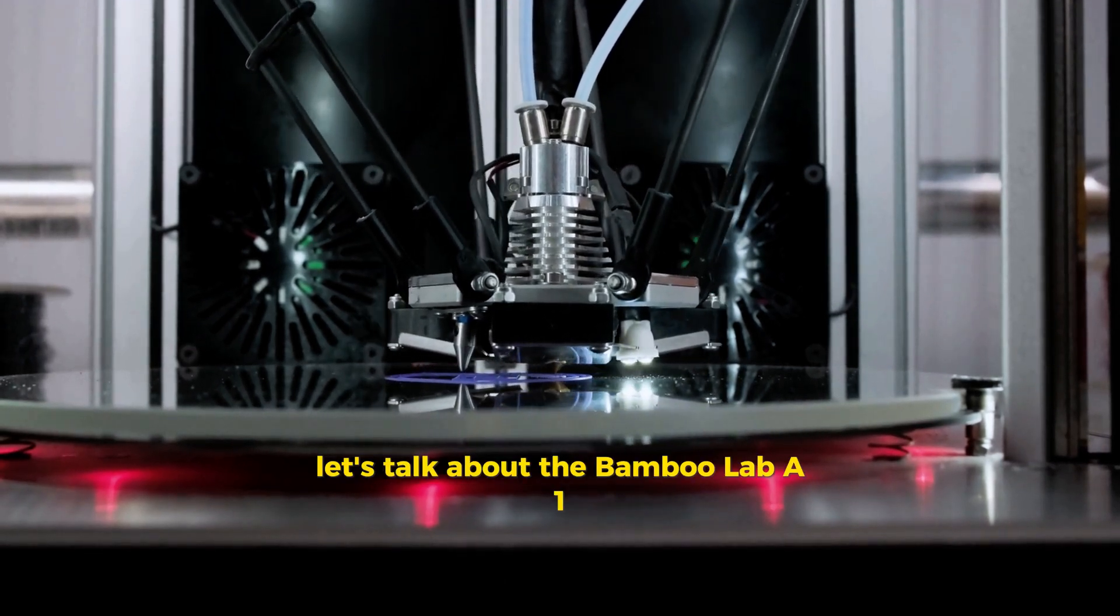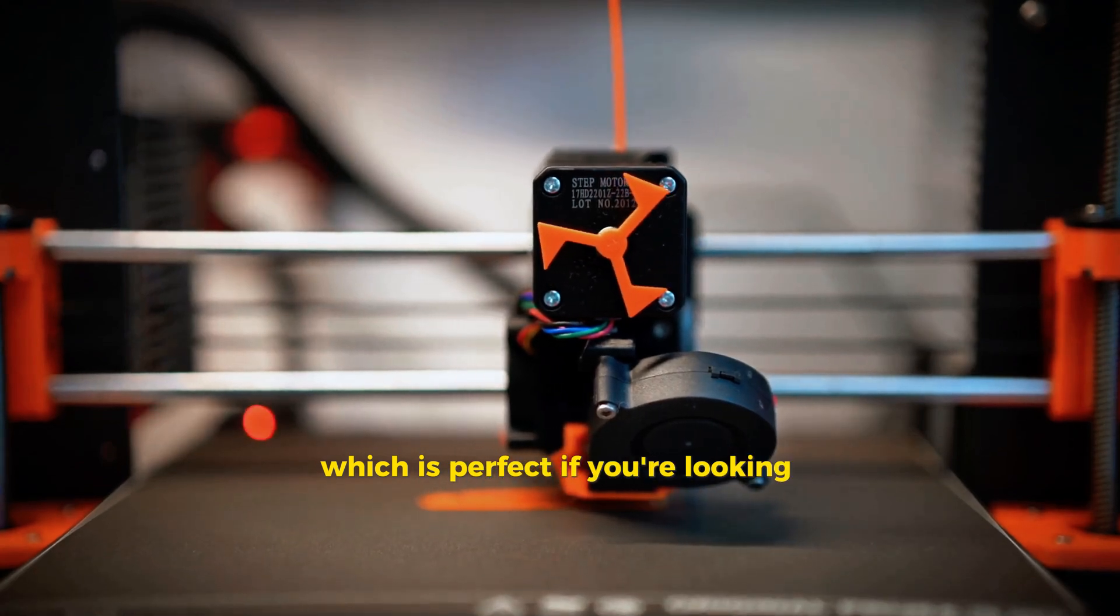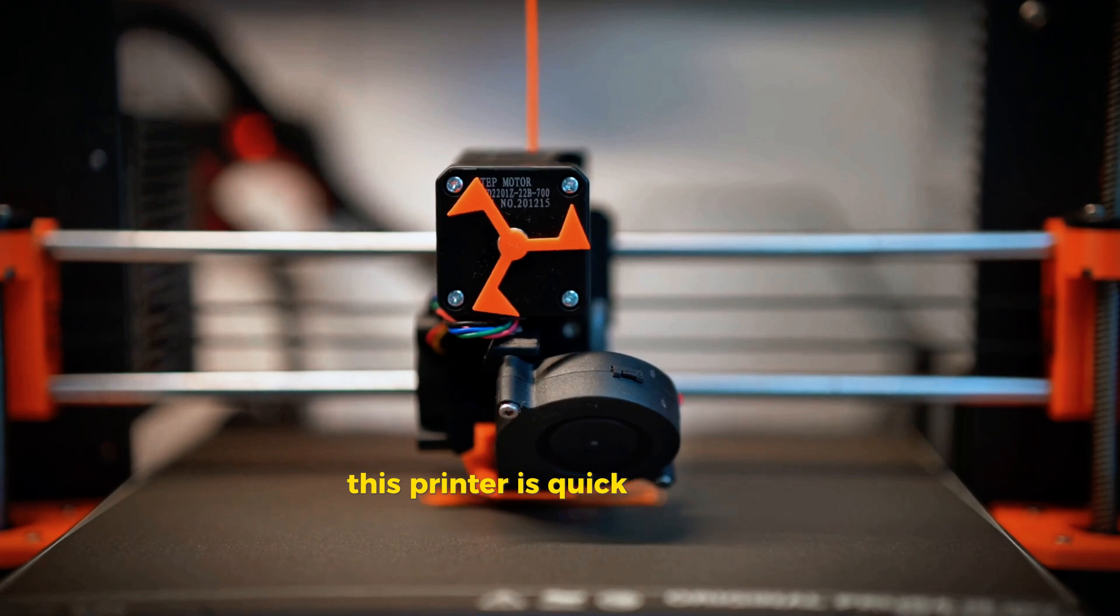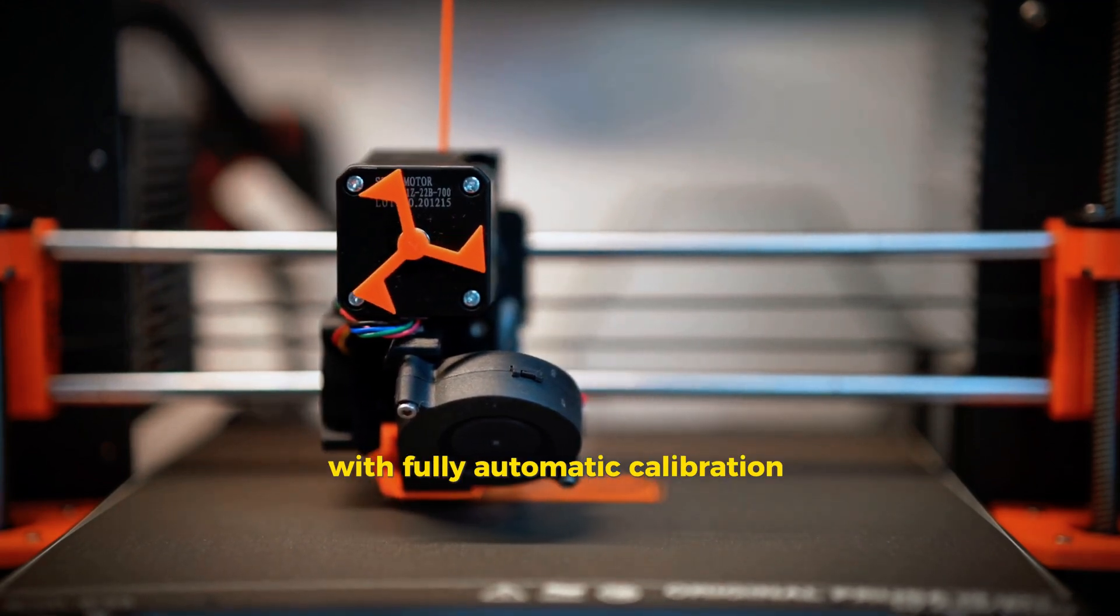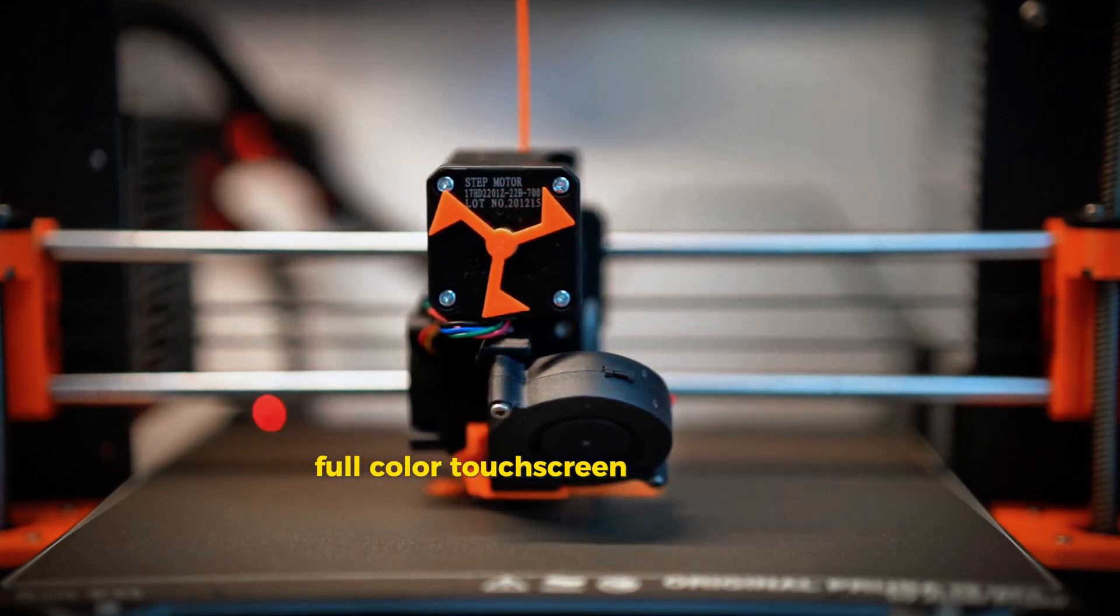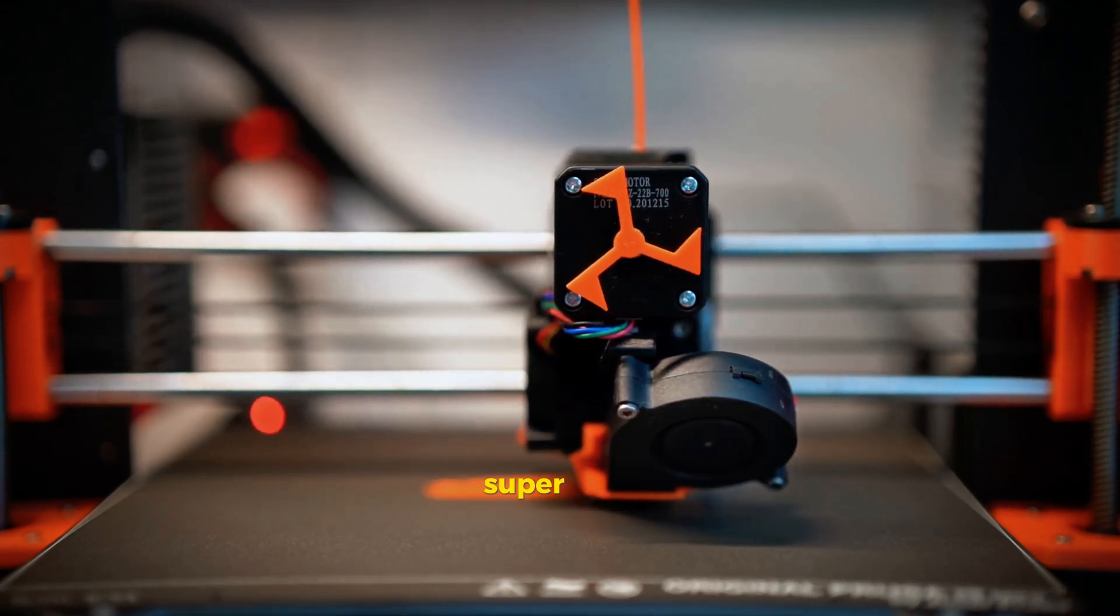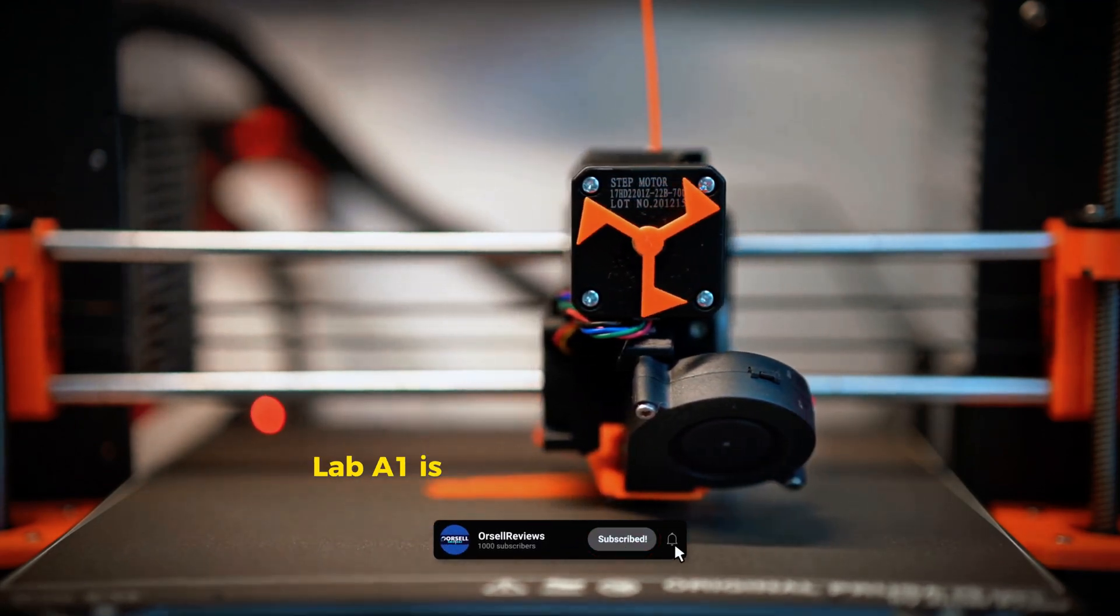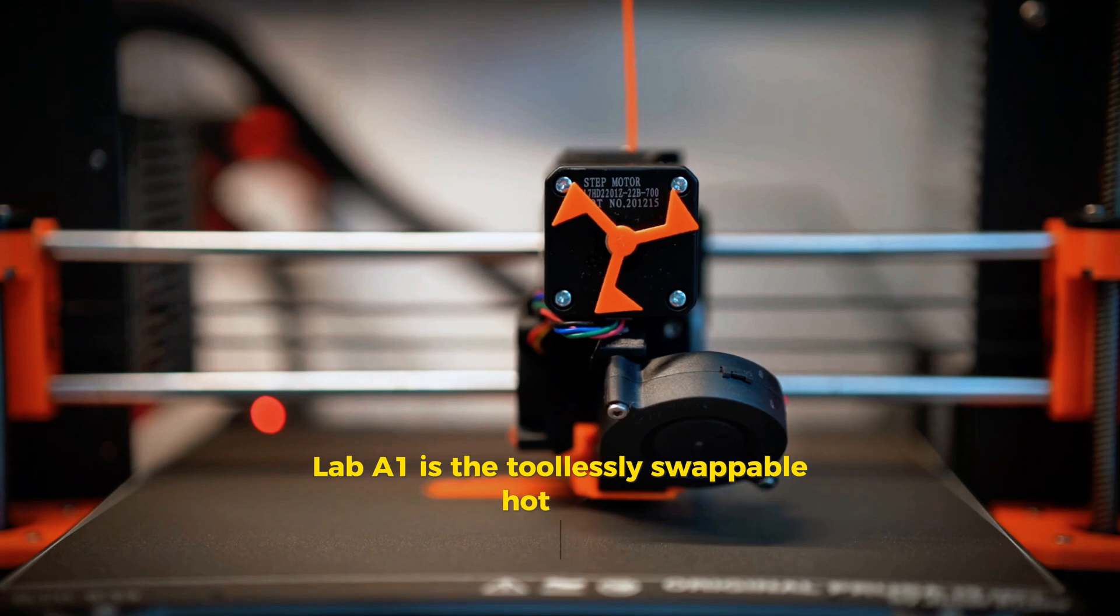Next, let's talk about the Bamboo Lab A1, which is perfect if you're looking to spend under $500. This printer is quick and quiet with fully automatic calibration and setup, making it a breeze to use. It's got a large full color touch screen that makes navigation super easy.